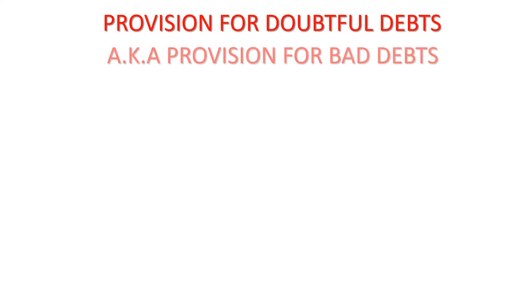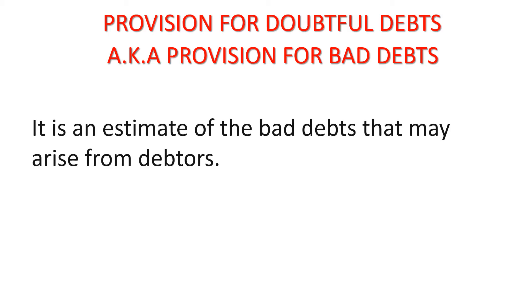Provision for doubtful debts, also known as provision for bad debts, is an estimate of the bad debts that may arise from debtors. It is usually a percentage. The business estimates this percentage based on its experience from previous accounting periods.